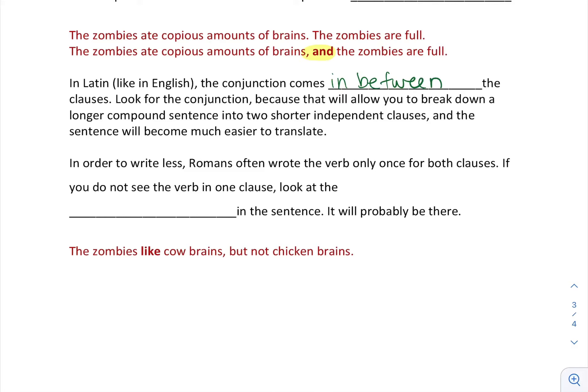In order to write less, Romans often wrote the verb only once for both clauses. So if you don't see the verb in one clause, look at the other clause in the sentence. We do the exact same thing—it will probably be there. "The zombies like cow brains, but not chicken brains." If we took out the 'but' and just said 'not chicken brains,' you'd say, oh that's not—that's a dependent clause because that doesn't make sense itself. But no, you really could say "The zombies like cow brains, but the zombies don't like chicken brains." It's just longer, so we naturally shorten it, and they do too. The verb belongs both places.